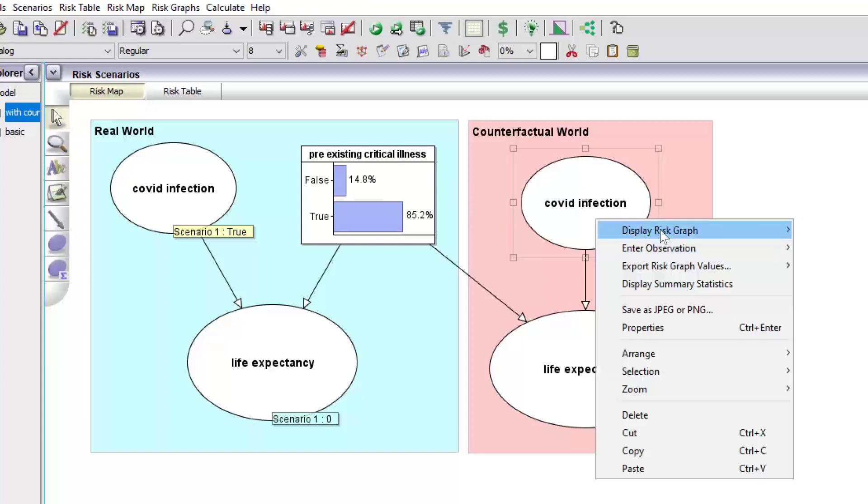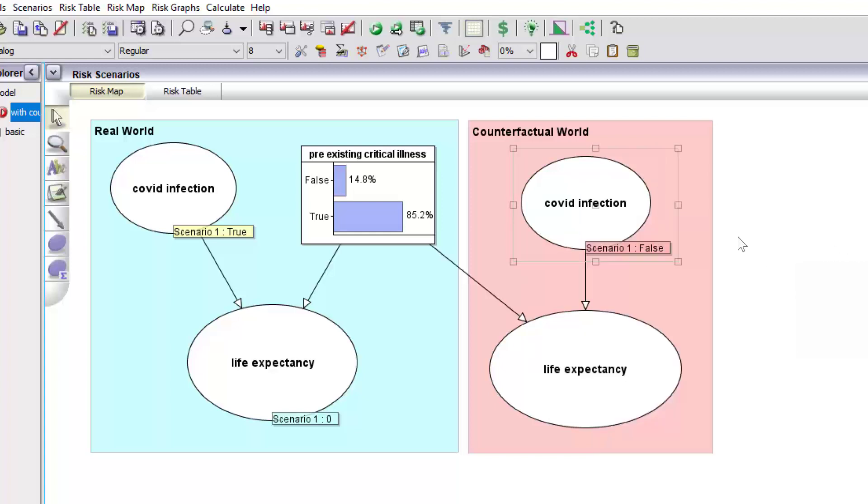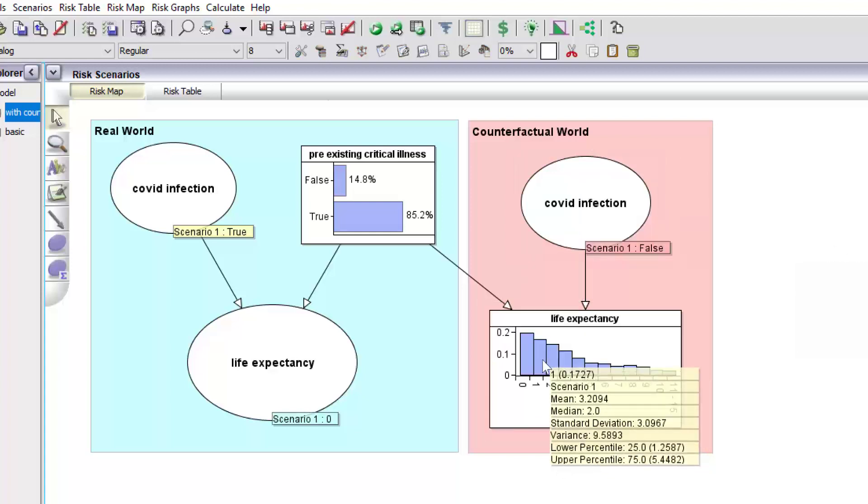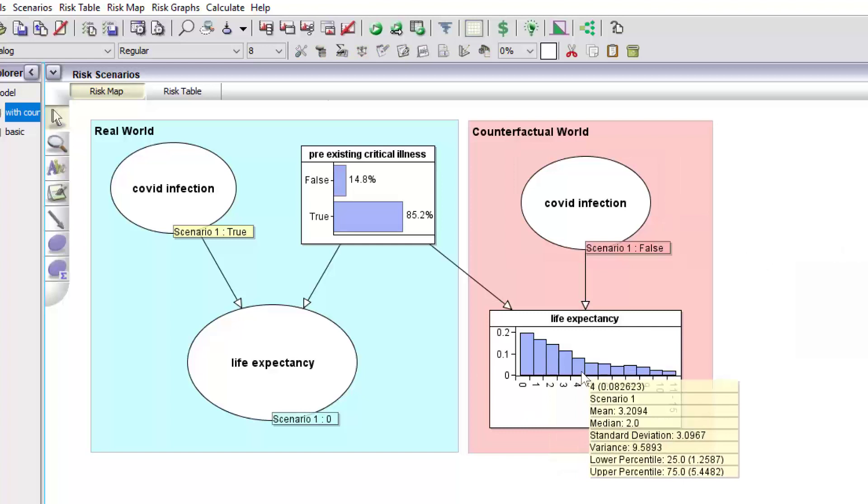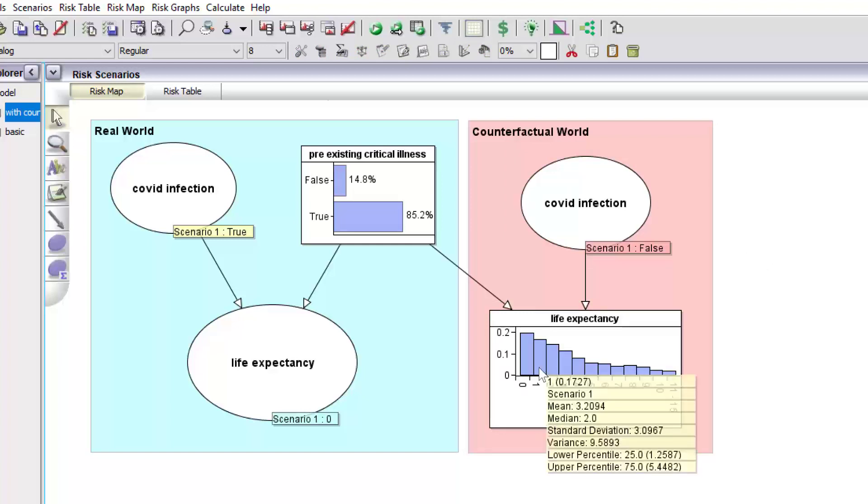So in the counterfactual world, when we make the counterfactual assumption that Fred didn't get Covid, we get this revised life expectancy where the median number of years is two rather than eight years. And as I said,